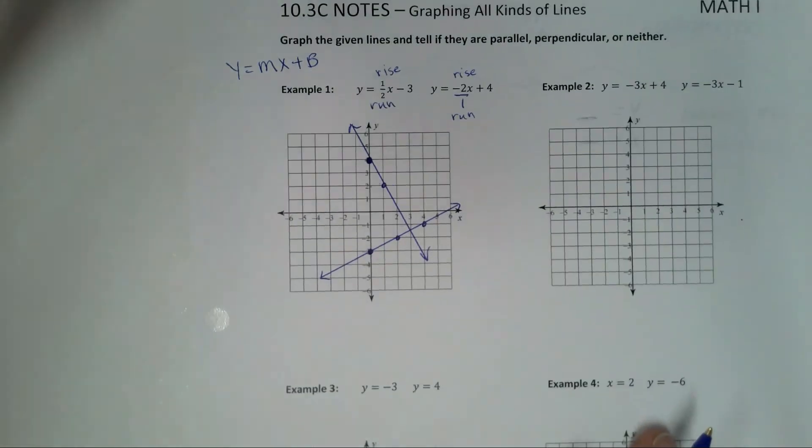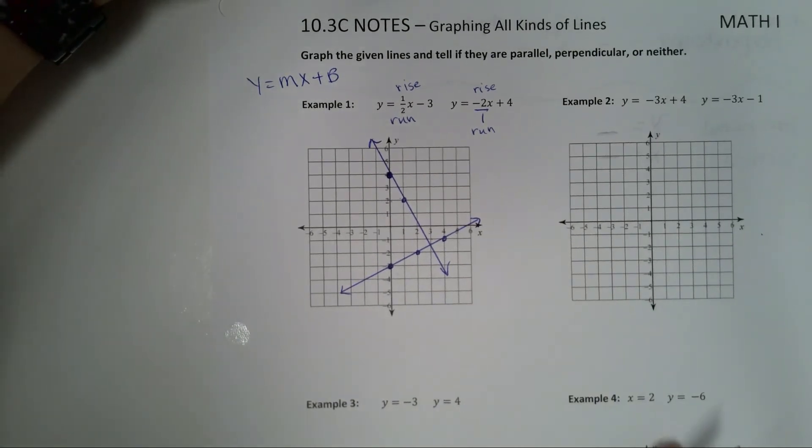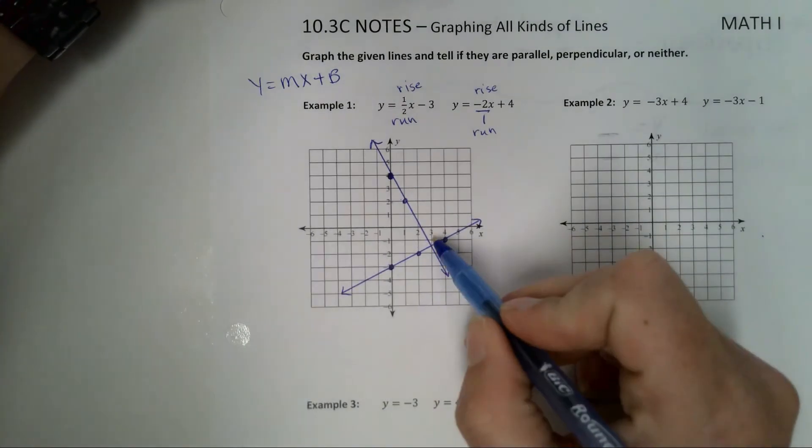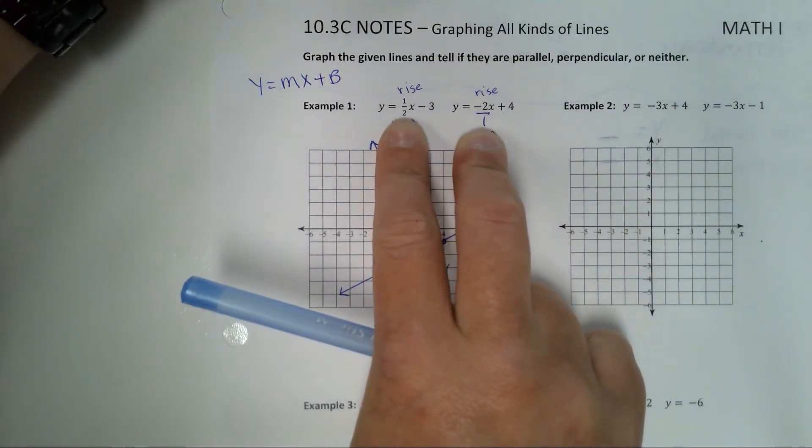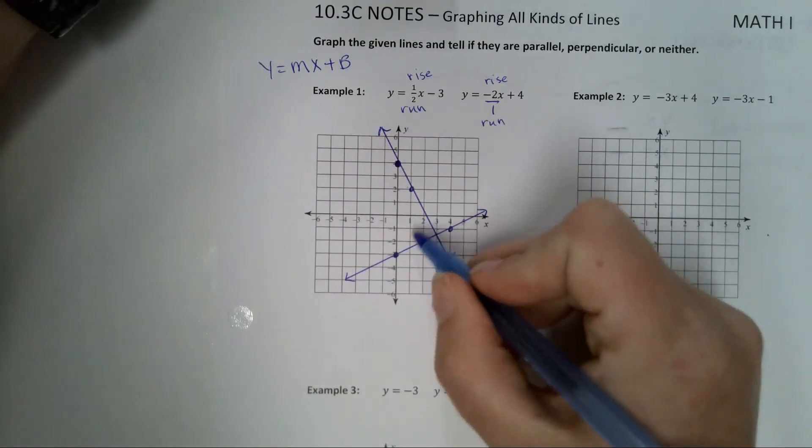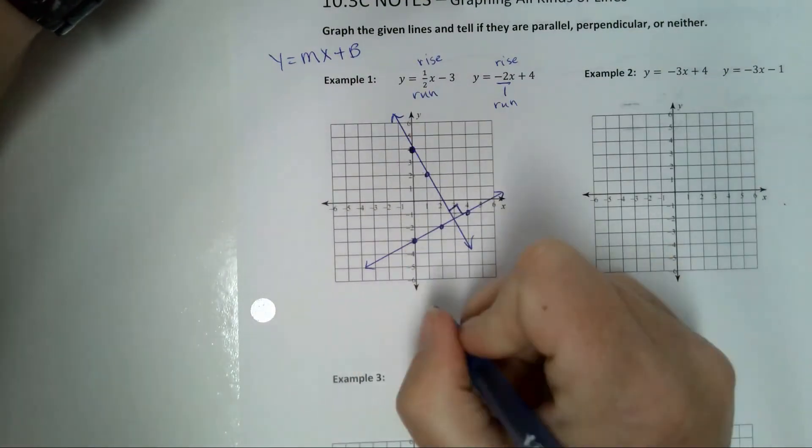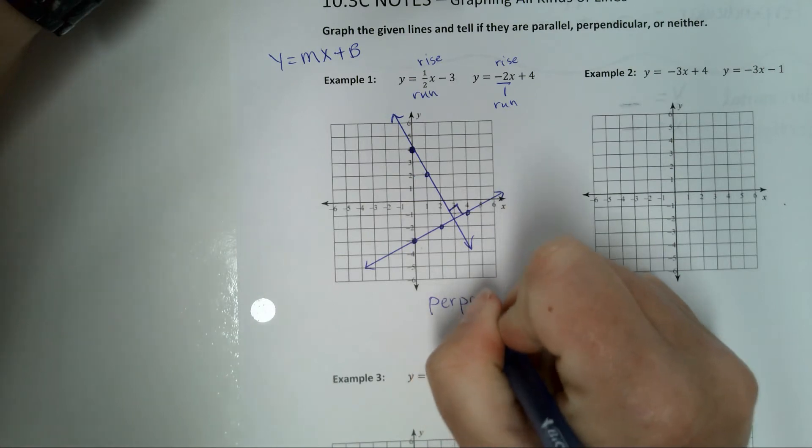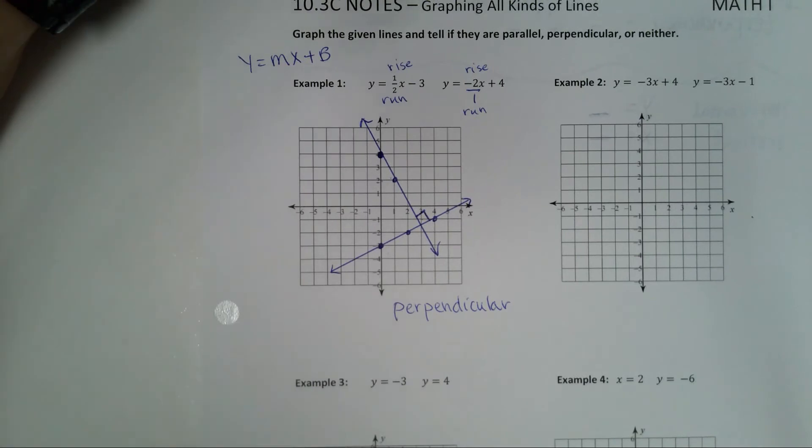Now, if you can't tell based on the graph if these are perpendicular or not, we know we're looking for a right angle. Well, let's say I can't tell if that's a right angle. Go back to your slopes. What we wrote on the back page is that they are flipped. Are these two flipped? 1 over 2, 2 over 1. Yeah, they're flipped. Is 1 positive and 1 negative? Yes. So that's all I need to know. Even if I can't tell, which I can tell, this is a right angle. But if I can't tell, then just look at your slopes. Yes, these are perpendicular.